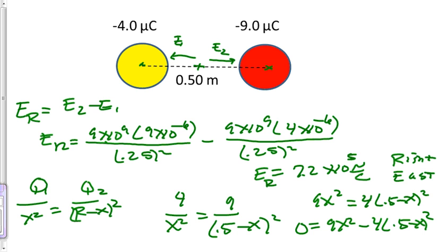Now I've got my quadratic equation. I'll just use solver on my TI calculator. And we find out that x has a value of 0.20 meters. Now since x is relative to the negative 4 microcoulomb charge, then the value is going to be somewhere about right here. This is 0.2 meters from the yellow charge.